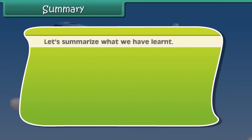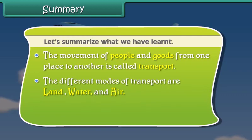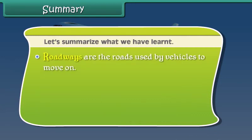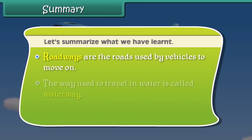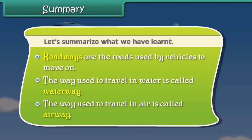Now friends, let's summarize what we have learned. The movement of people and goods from one place to another is called transport. The different modes of transport are land, water and air. Railways are the road tracks over which trains run with the help of wheels. Roadways are the roads used by vehicles to move on. The way used to travel in water is called waterway, and the way used to travel in air is called airway.